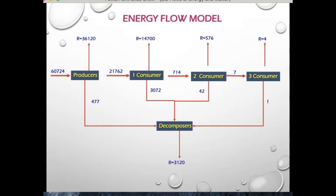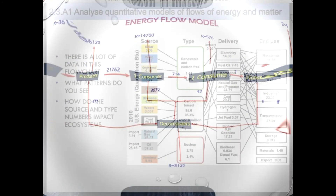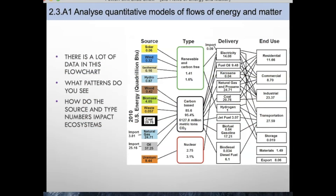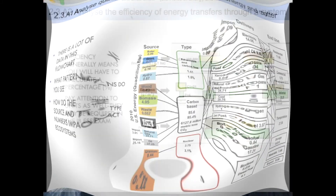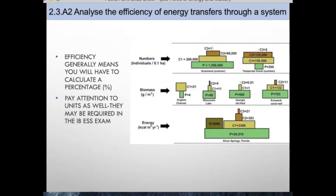Pause at this point and evaluate this quantitative model of flows of energy. Your first application is to analyze quantitative models of flows of energy — take a look at the diagram on the right, there is a lot of data in this flow chart. What patterns do you see? How do the source and type of numbers impact an ecosystem? In application two, you need to analyze the efficiency of energy transfer through an ecosystem. Efficiency generally means you will have to calculate percentages — pay attention to units as well, as they may be required in an IB exam.